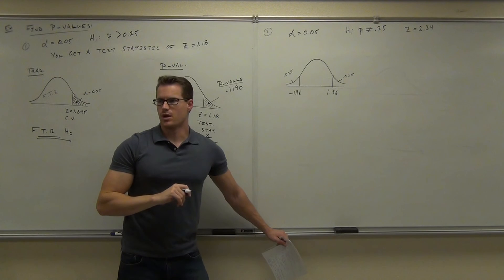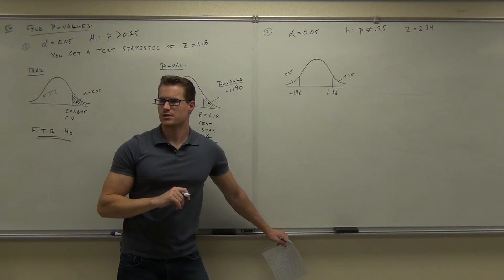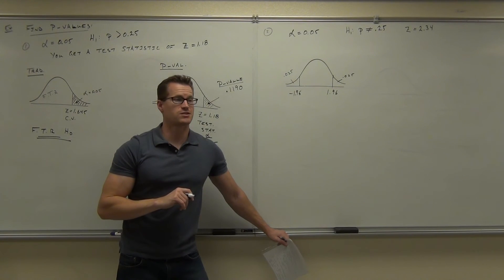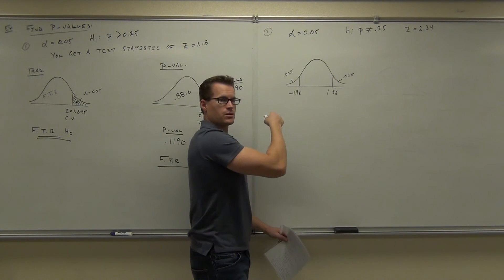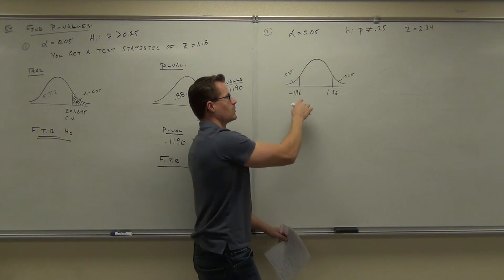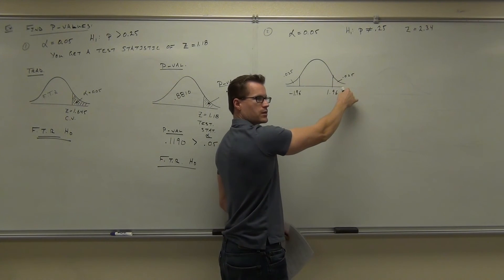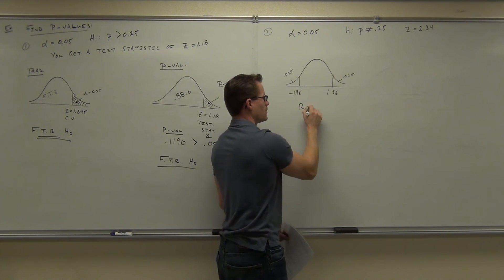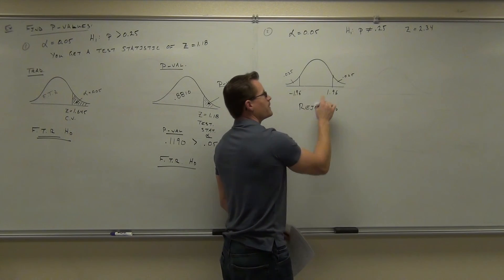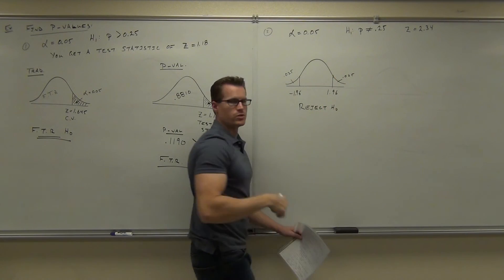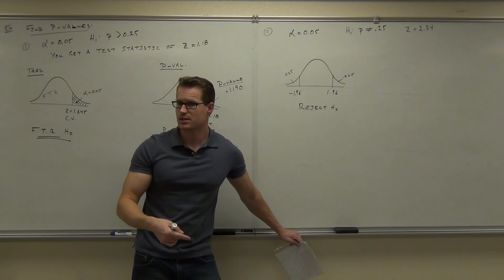Would you reject or not? You should be able to make that determination right now. Would you reject or not? What's your test statistic? Does it fall in the rejection region? Where is 2.34? It's over here, right? This says 2.34 falls here. You would reject H₀. Does that make sense to you?